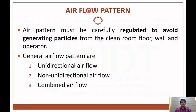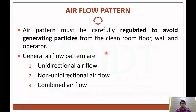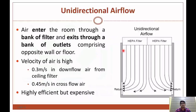Now let's discuss the air flow pattern in the laminar air flow unit. Air patterns must be carefully regulated to avoid generating particles from the clean room floor, walls, and equipment. Generally, air flow patterns are of three types: unidirectional air flow, non-unidirectional air flow, and combined air flow. In unidirectional air flow, air enters the room through a bank of filters and exits through a bank of outlets comprising the opposite wall or the floor.